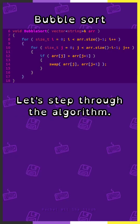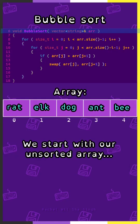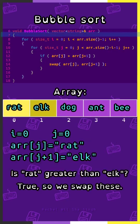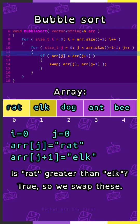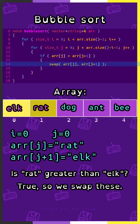Let's step through the algorithm. We start with our unsorted array. i is 0 and j is 0. Array sub j is rat, array sub j plus 1 is elk. Is rat greater than elk? True, so we swap these.